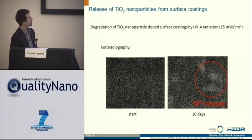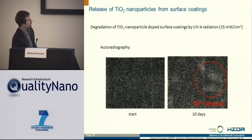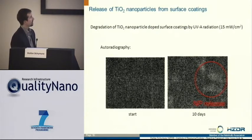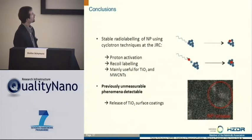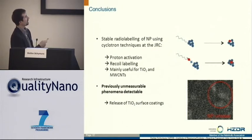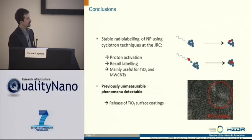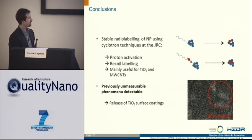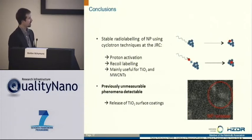Here you see pictures from autoradiography. This is the picture from the start, and then you see fields where there is less black — this is where the nanoparticles get released. But again, we don't see anything happening in these spots with SEM. To conclude: at the JRC we did radio labeling using cyclotron methods, specifically proton activation and recoil labeling, which are mainly useful for titanium dioxide and also multi-wall carbon nanotubes. For silver, it's not that useful because of the energy intake. The main point is that by using these radio labeled particles, we make previously unmeasurable phenomena detectable — specifically the release of titanium dioxide out of surface coatings.